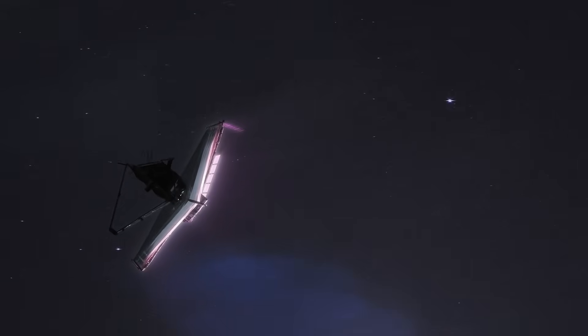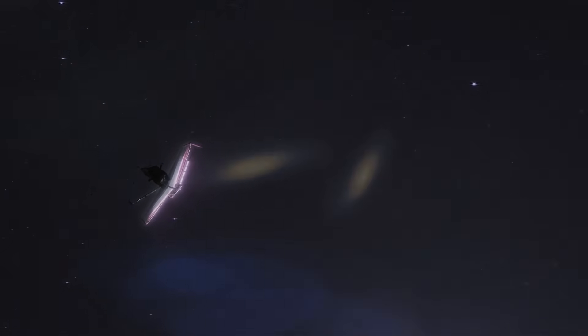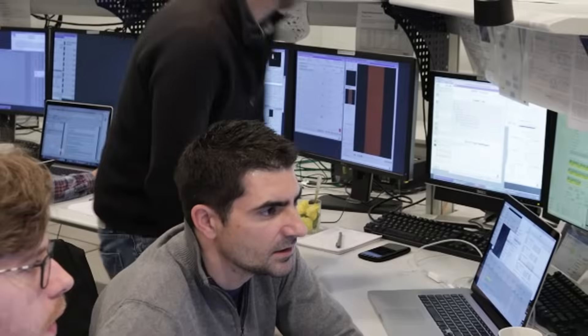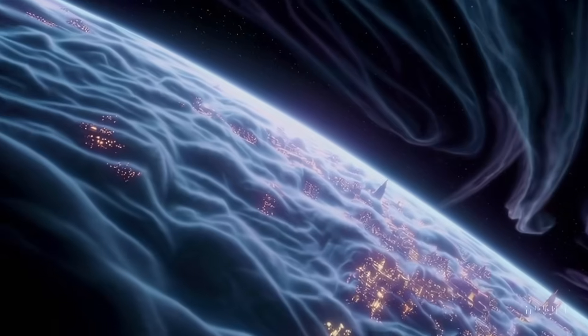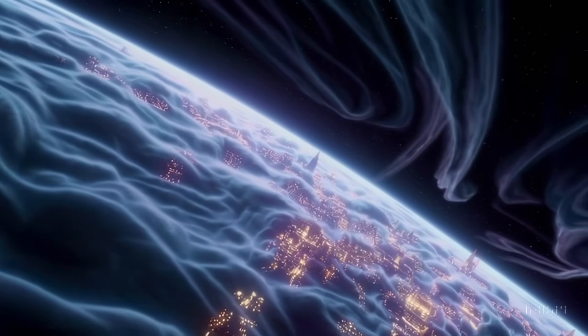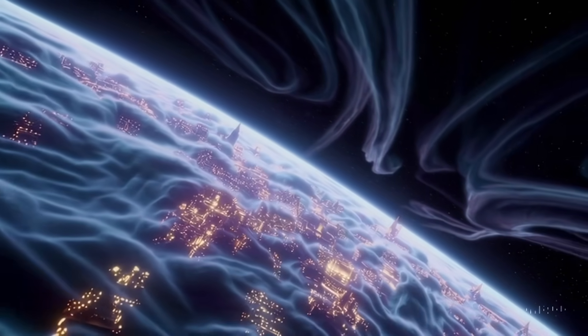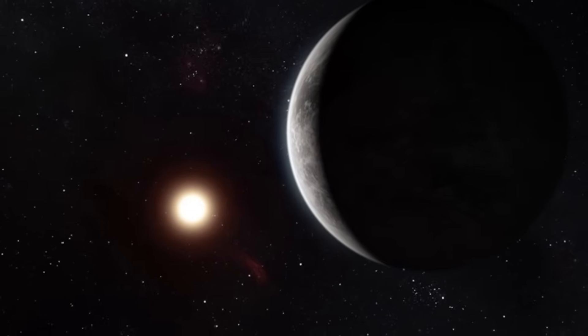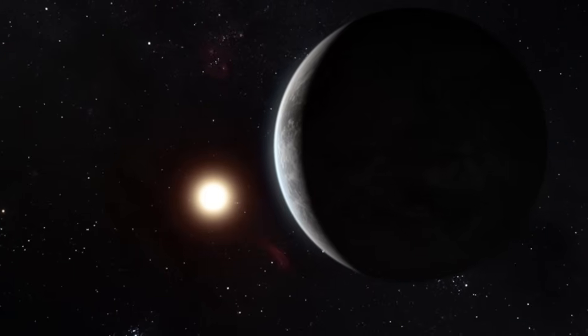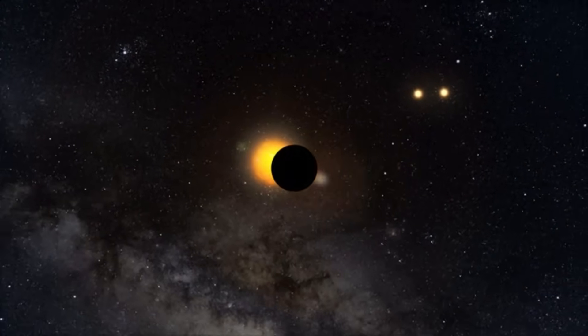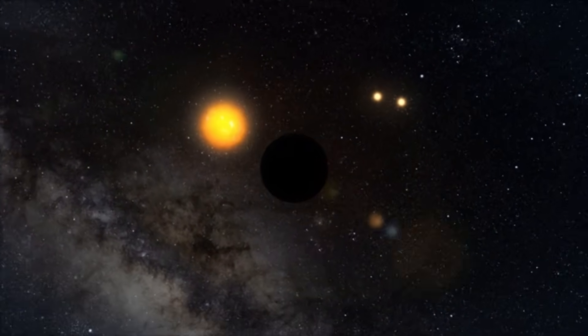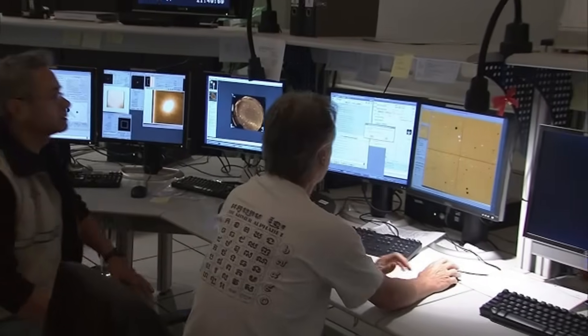We're going to break down what all this means and dive into the answers to these questions. What's coming next could shift everything we know about life in the universe. The signal from Proxima Centauri was unlike anything we've encountered before. Narrow band and unmistakably artificial. It became clear that this wasn't just another random anomaly. It was something purposeful, something designed, and that changes everything.